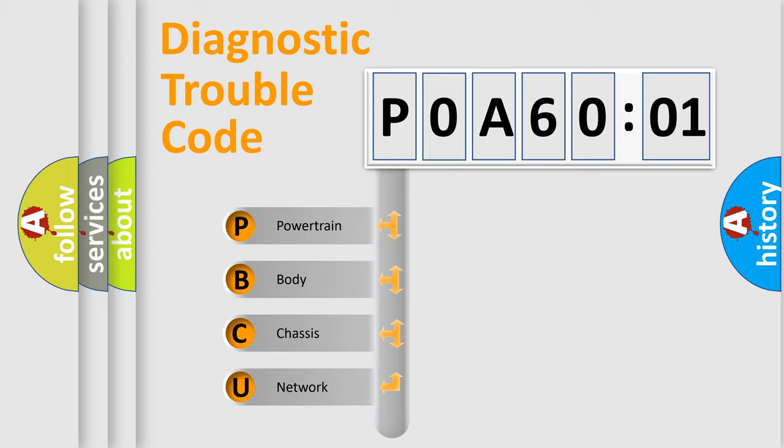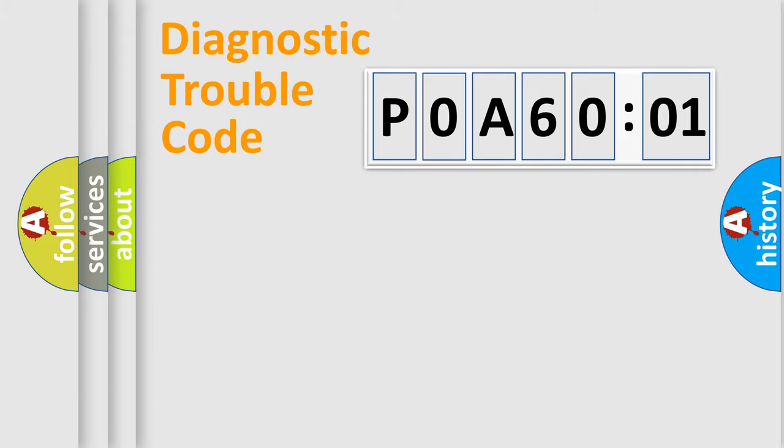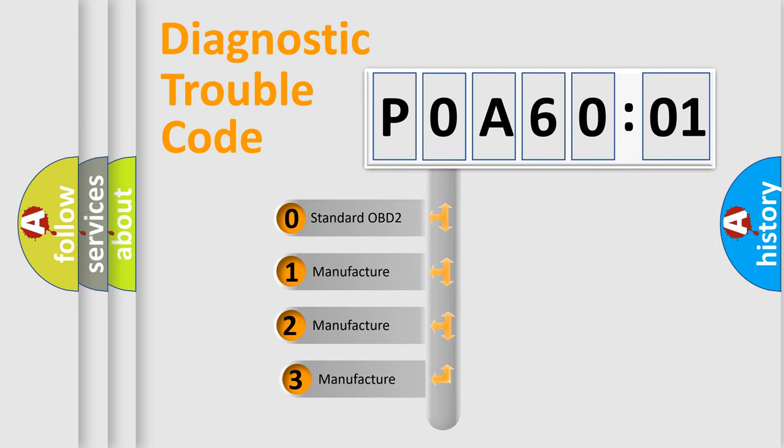If the second character is expressed as zero, it is a standardized error. In the case of numbers 1, 2, or 3, it is a more prestigious expression of the car-specific error. The third character specifies a subset of errors. The distribution shown is valid only for the standardized DTC code.